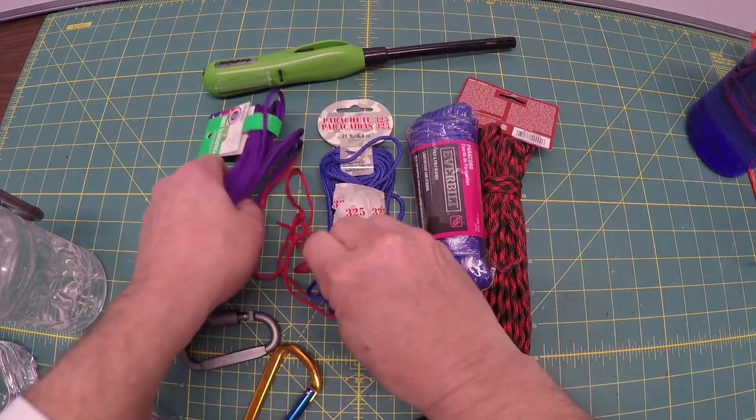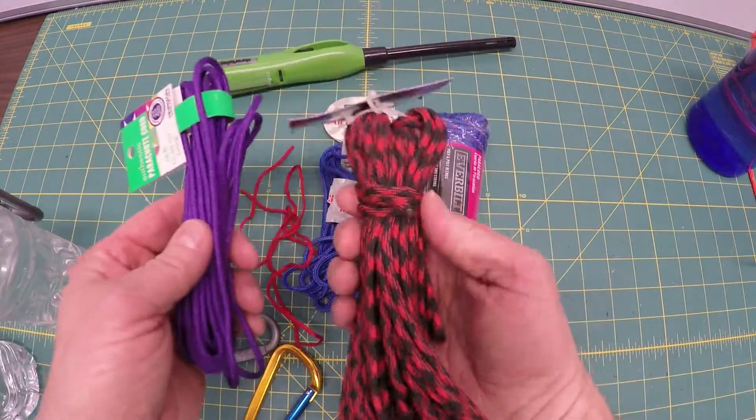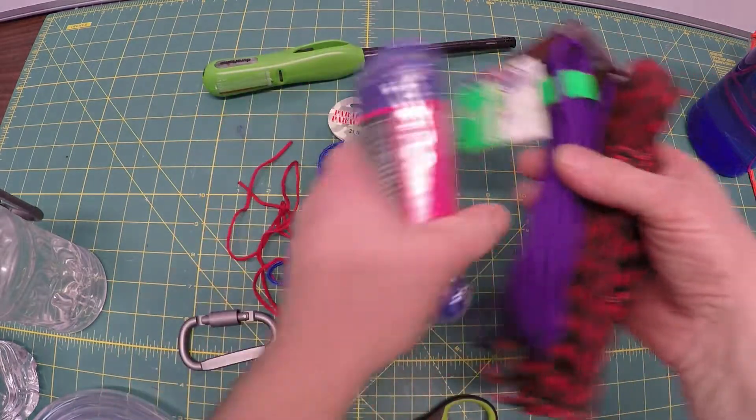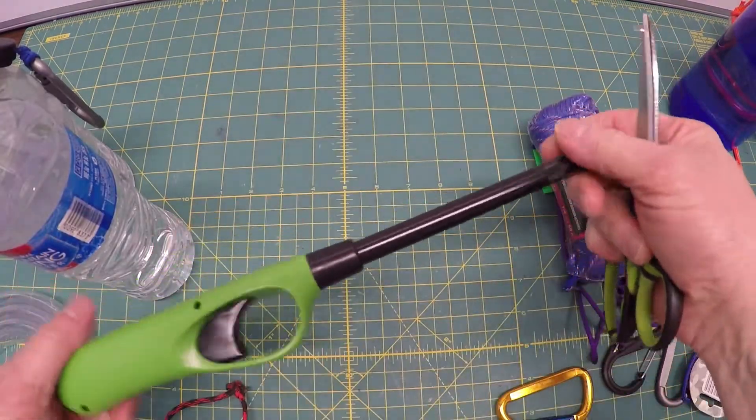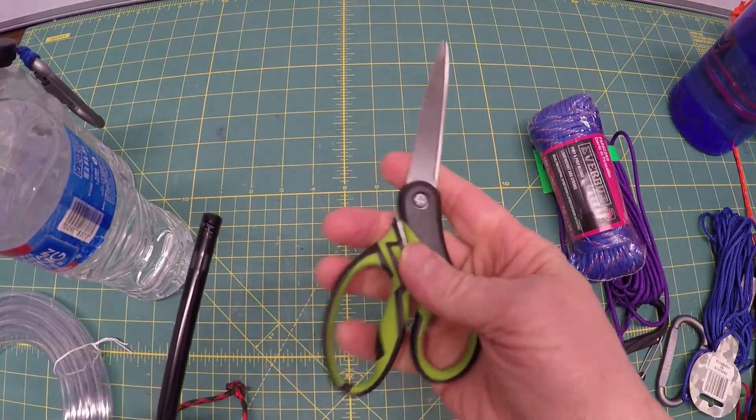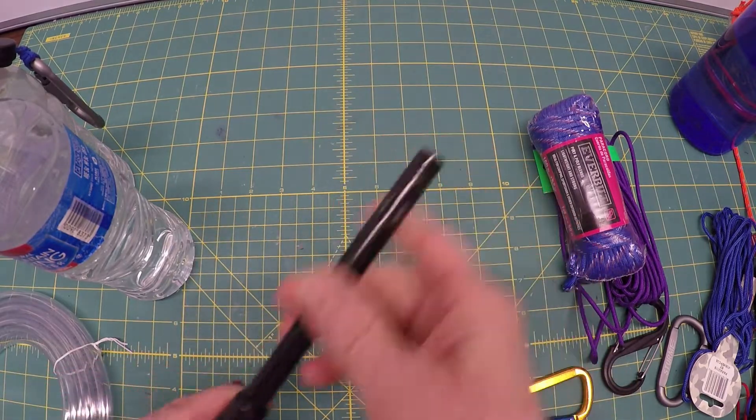As far as cordage goes, you can use any kind of paracord that you want color wise. Tools: a lighter of some sorts and a pair of scissors to cut the cord. And this kind of finishes off the cordage.